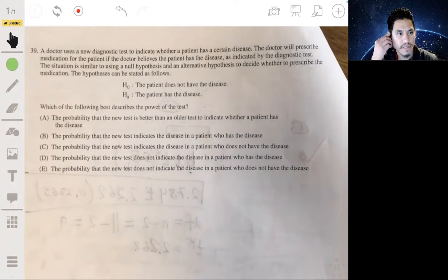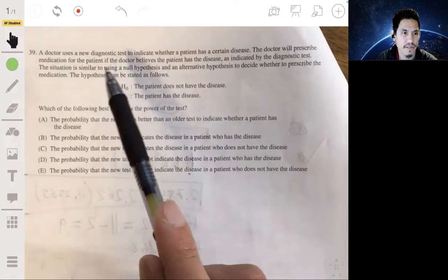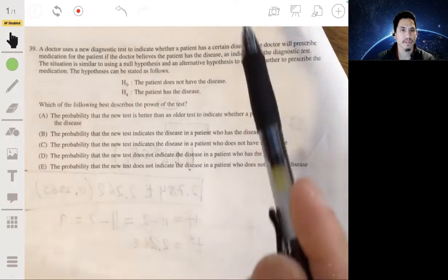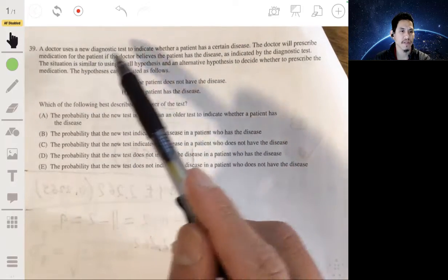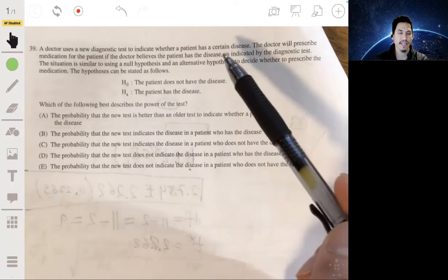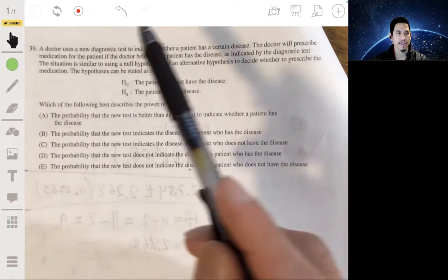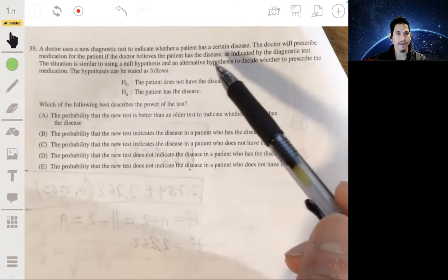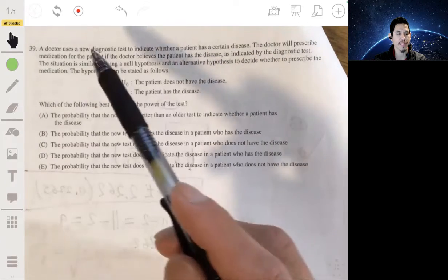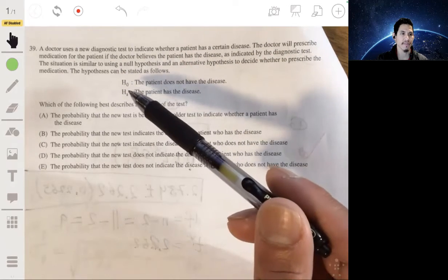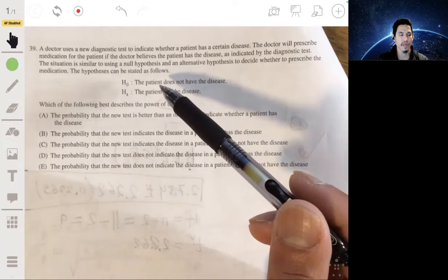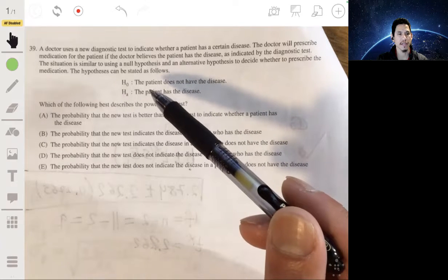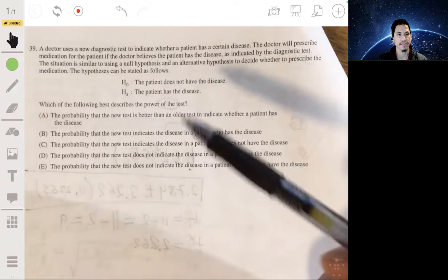All right, 39. We have a doctor that uses a new diagnostic test to indicate whether a patient has a certain disease. The doctor will prescribe medication for the patient if the doctor believes the patient has the disease as indicated by the diagnostic test. The situation is similar to using a null hypothesis and an alternative hypothesis to decide whether to prescribe the medication. The hypothesis can be stated as follows: H0, the patient does not have the disease. HA, the patient has the disease.